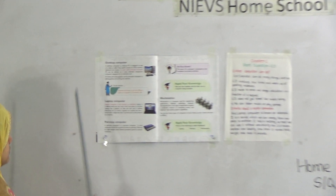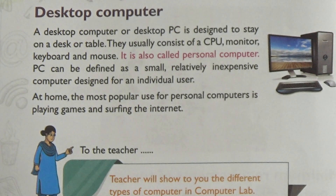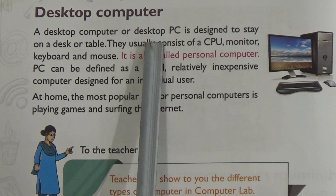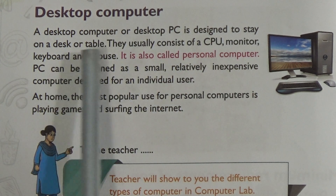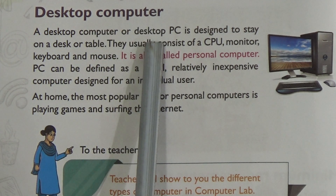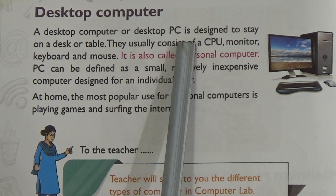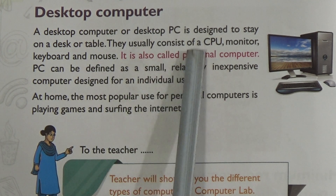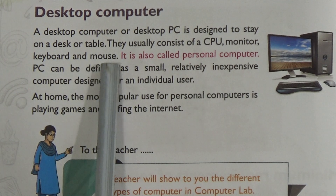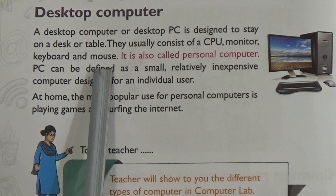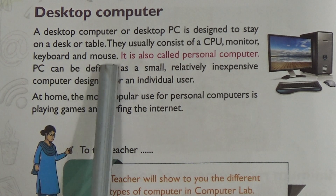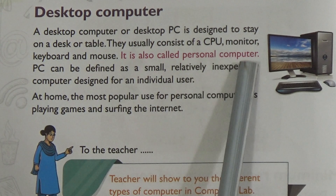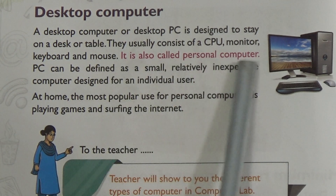Chapter 1 — go to page number 10. Here we will learn about desktop computer, laptop computer, and palmtop computer. A desktop computer or desktop PC is designed to stay on a desk or table. They usually consist of a CPU, monitor, keyboard, and mouse. So the parts of a desktop computer are CPU, monitor, keyboard, and mouse.